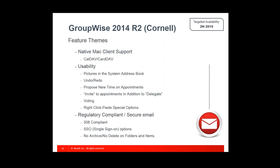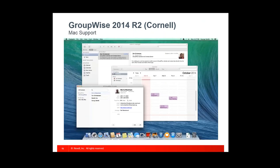There's also the ability to invite people and delegate. If I receive an appointment and want to add Paul to it, I can invite him, which is what a lot of people actually use delegate for. But delegate really means you're not going to do it — you're delegating someone to do it on your behalf. Now we'll have both options so it makes more sense. There's also some compliance with various regulations: Section 508 for accessibility, some single sign-on stuff, and a neat use case for archiving or folder cleanup where you can exclude certain folders. With the Cornell release, you'll see Mac Mail, Mac Contacts, and Mac Calendar apps all hitting a GroupWise back end.